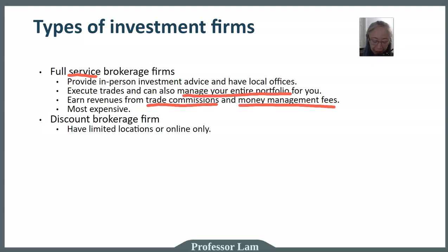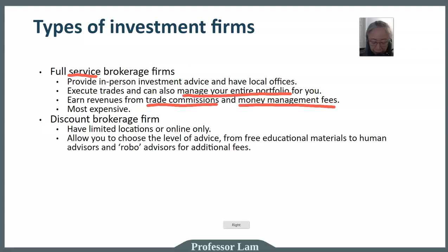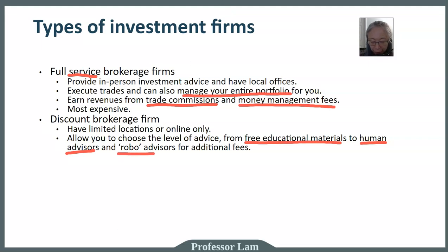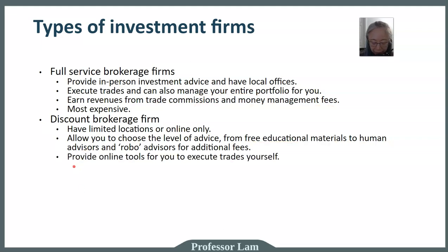Another type is the discount brokerage firm. They typically have limited locations and some may only have an online presence. Most discount brokerage firms allow you to choose the level of service you want. Many offer free educational materials online, and some have human advisors you can talk to over the phone, via Zoom, or even face-to-face. They may also have robo-advisors, which are automatic advisors. These are typically fee-for-service, so you choose your level of service and how much you want to pay. You can execute your trades yourself using online tools, and commissions are much lower than at a full-service firm.